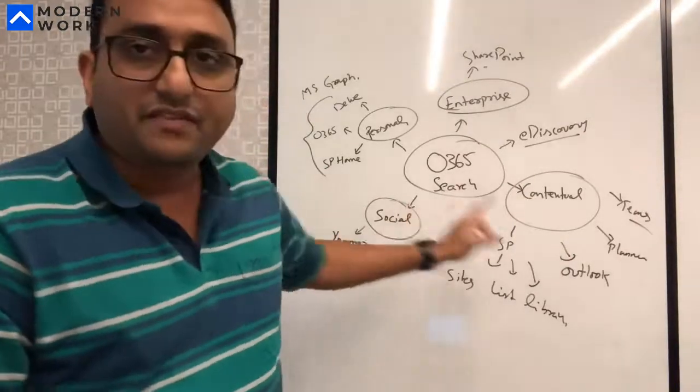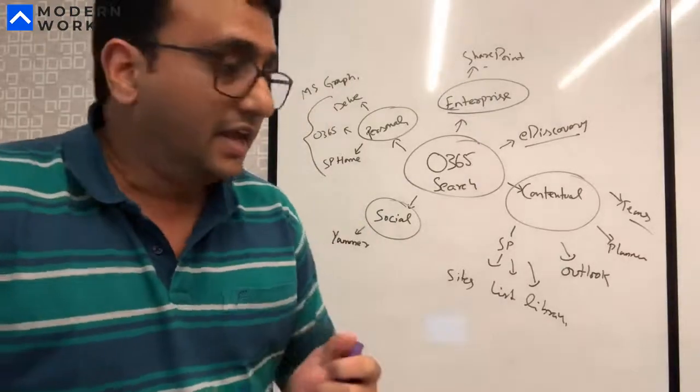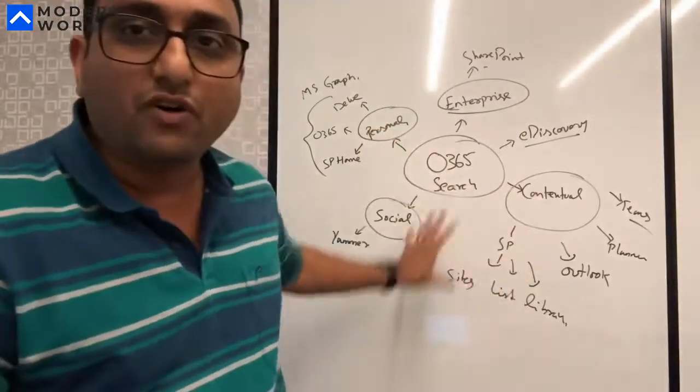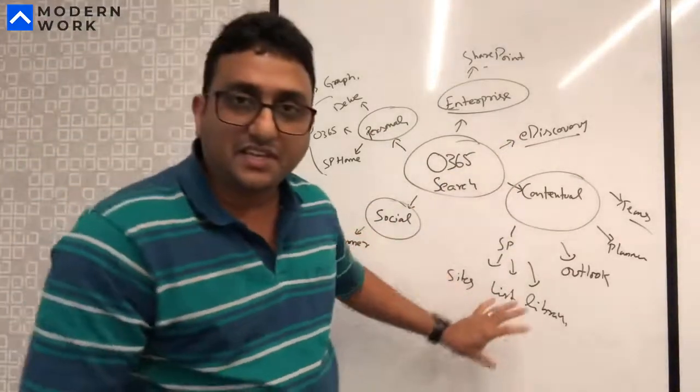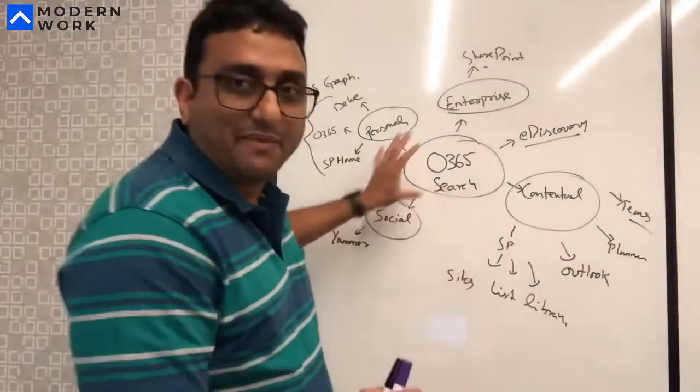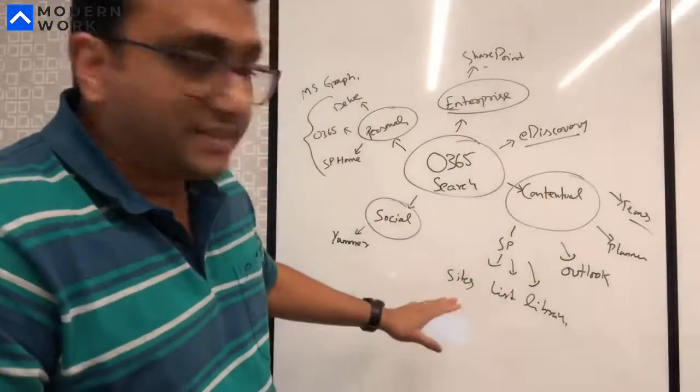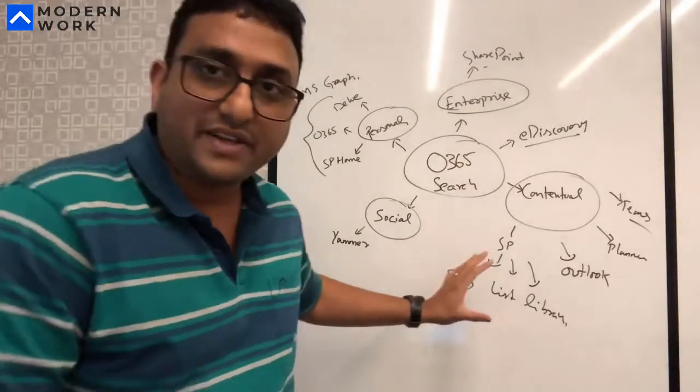There you go. These are the different search experiences available in Office 365 as of today. Yesterday I was alluding to the fact that we need some sort of consolidation around this search experience because, as you can see, users have to go to different apps to find different types of content. That's what I mean by consolidating some of these experiences into a unified search experience.